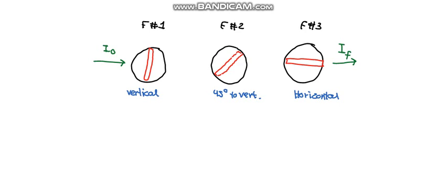Let's start with filter number one. The outcoming intensity would be I naught cos square theta. The wave is already vertically polarized, so the angle would be zero. That becomes cos square zero, which equals I naught. So the outcoming intensity is also I naught.